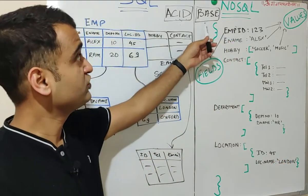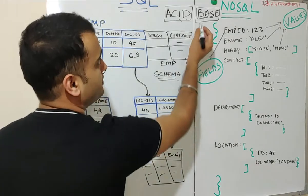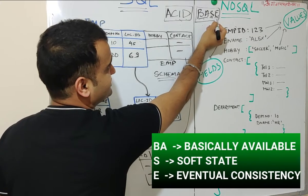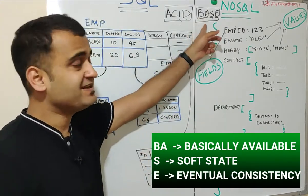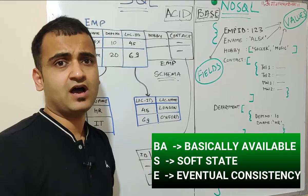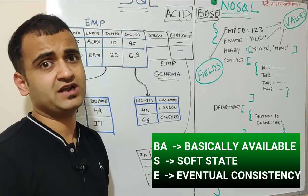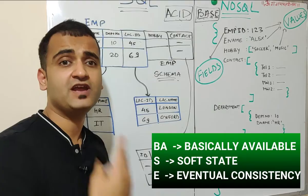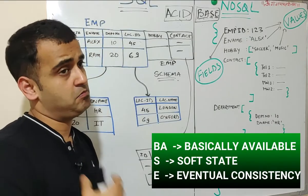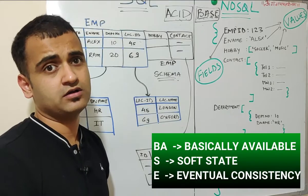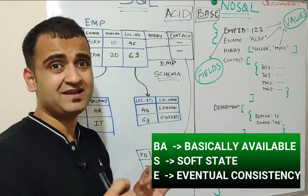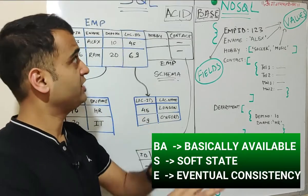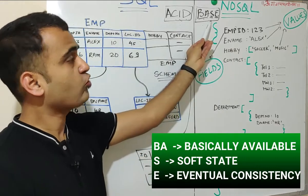But on the flip side, a NoSQL database follows BASE principle. So BASE stands for basically available, soft state and eventual consistency. Now let's understand that. Basically available means that pretty much whatever data which tries to come into a NoSQL database would be available. There might be scenarios where you might encounter failure state because the data which is coming in might fail to enter into the system. Overall, the data would be available in the database sooner or later. So this is called as basically available.